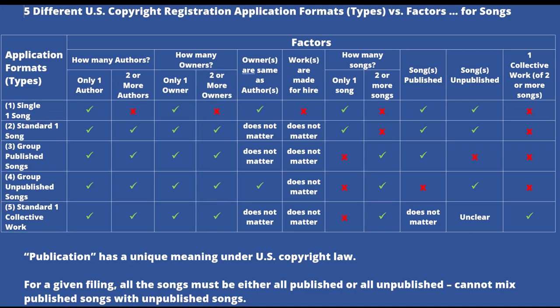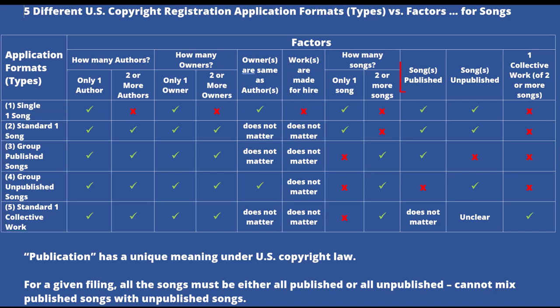And if any of these songs, or a portion of the songs, were works made for hire, that would also eliminate the very first copyright registration application approach — the single approach. You wouldn't be able to use that if any of the songs were works made for hire. You'd have to look at one of the other four approaches. With respect to the songs being published, if you had two or more songs that were published, then approach number four would not work.